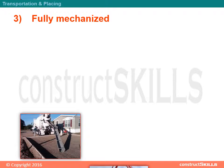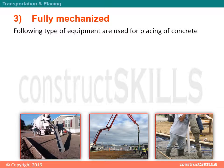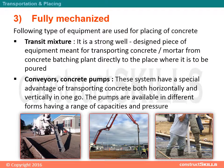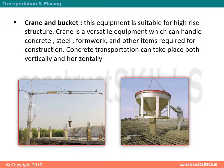In the fully mechanized mode, the following types of equipment are used for placing concrete. Transit mixer: a strong, well-designed piece of equipment meant for transporting concrete and mortar from the concrete batching plant directly to the place where it is to be poured. Conveyors and concrete pumps have the special advantage of transporting concrete both horizontally and vertically in one go; pumps are available in different forms with a range of capacities and pressures. Crane and bucket: suitable for high-rise structures; the crane is a versatile piece of equipment that can handle concrete, steel, formwork, and other construction items.